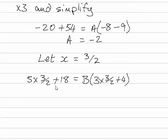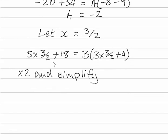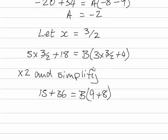So we have 5 times 3 over 2 plus 18 equals B times 3 times 3 over 2 plus 4. So I'm going to multiply both sides by 2 and simplify.